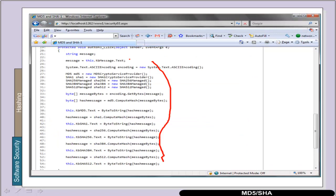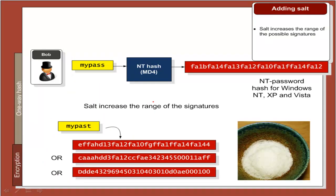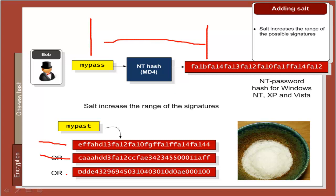The problem with hash signatures, as we've seen, is that they are vulnerable to a dictionary attack. One way around this is to add salt, so that we can have a range of hash signatures for the same original text, making it more difficult for Eve to try and guess the original text.